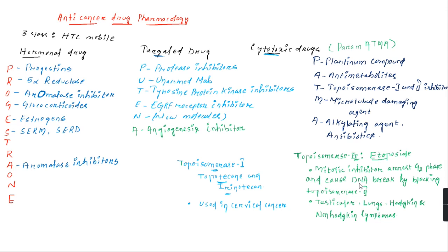Hello everyone. In the last video, we discussed in detail the pathophysiology of cancer. In this session, I will discuss in detail the drugs used in the treatment of different cancers. Let us start the pharmacology part of cancer. Anti-cancer drugs are basically divided into three categories.